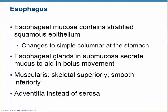The muscular layer is interesting in that it is voluntary skeletal muscle in the upper third, and the lower third is involuntary smooth muscle. In between, it's a mixture of both. So the act of swallowing is voluntary at first, but as soon as it gets down a certain way, it becomes involuntary. The esophagus is embedded in other tissues, so there's not a serosa — it's not in a cavity. There is a connective tissue outside layer called an adventitia.